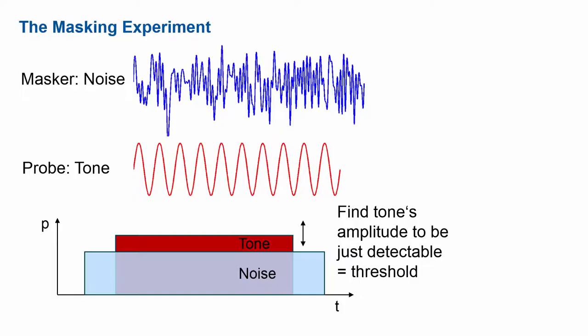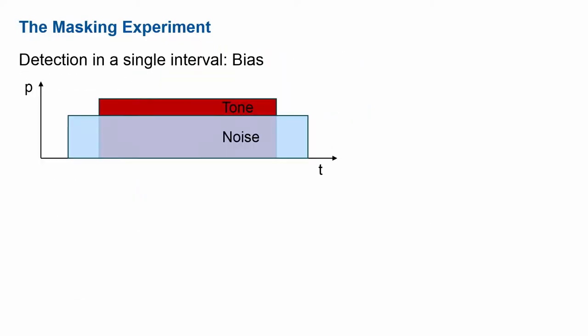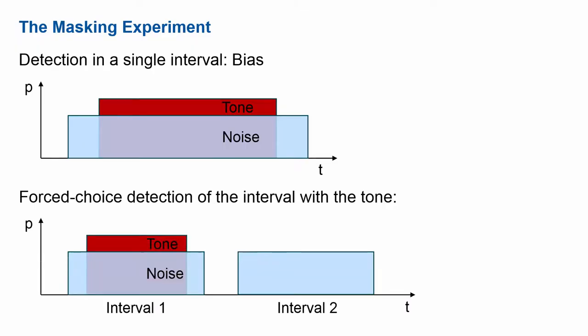The hearing threshold experiment is often done, as audiologists do it, in a single interval procedure: the tone is played and somebody has to press a button whether the tone is heard. However, this has a potential bias, because somebody might be very sensitive and press the button when there's just a faint tone, while somebody else might want to hear the tone very clearly before pressing the button. This difference can be as large as 10 decibels, and this bias is something we don't want in our experiments.